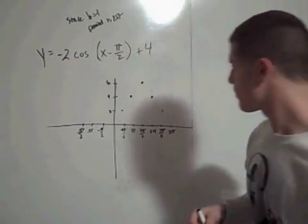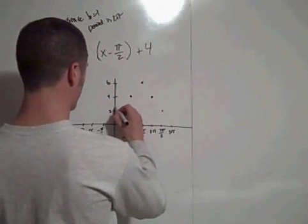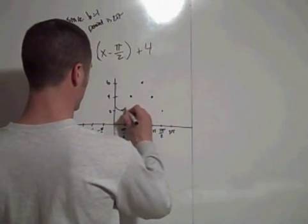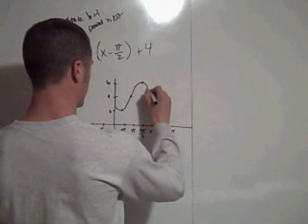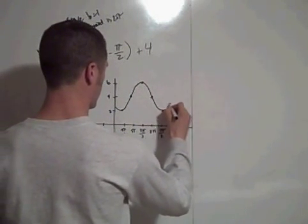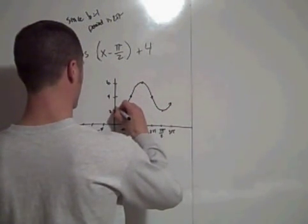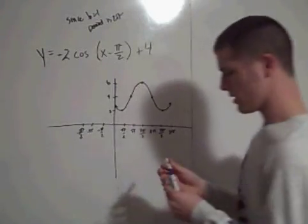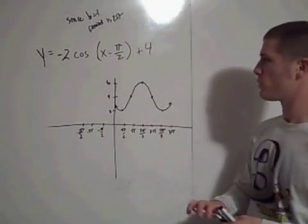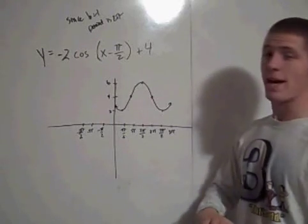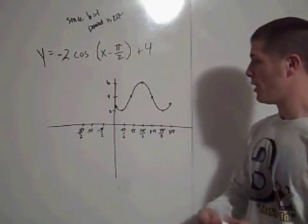So, what does the graph look like? Well, connect these dots. And this is the graph of y equals negative 2 times the cosine of x minus pi halves quantity of that, plus 4.